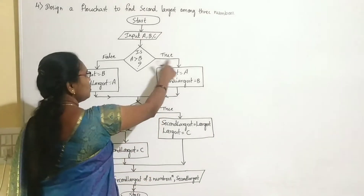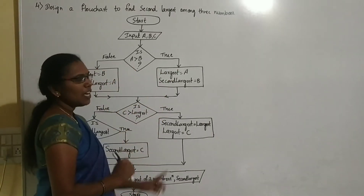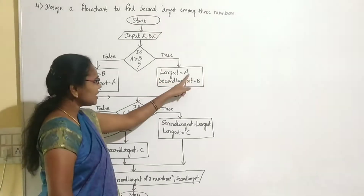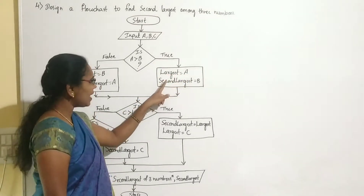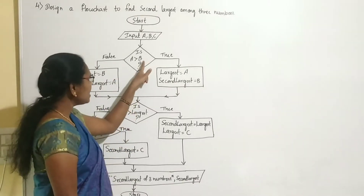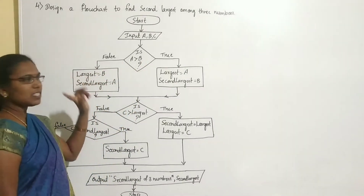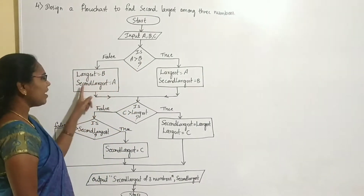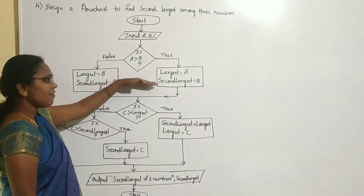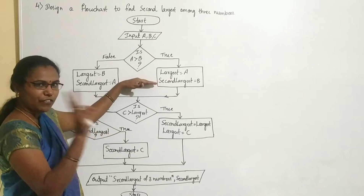There are two possibilities, so we represent true and false directions. If true, we write the statements: assign A to largest and B to second largest. If false, we assign B to largest and A to second largest. This way we find the largest and second largest of two numbers.